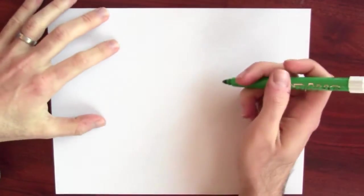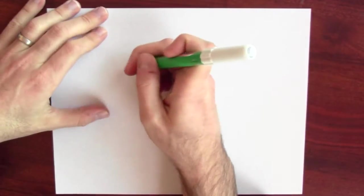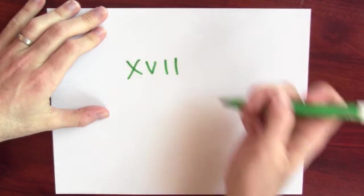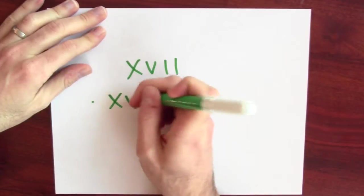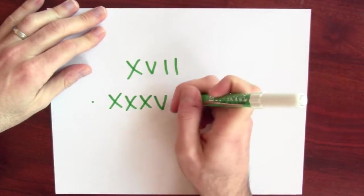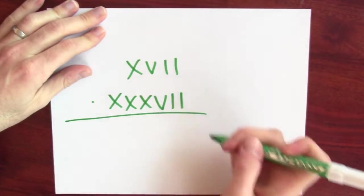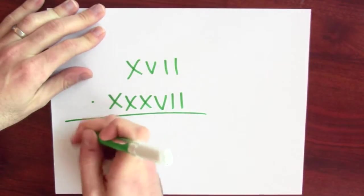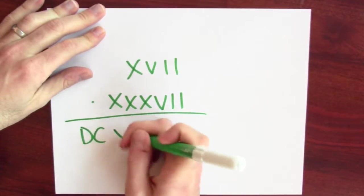You can imagine somebody trying to multiply 10, 15, 17 by 10, 20, 30, 35, 36, 37, and getting 500, 629.